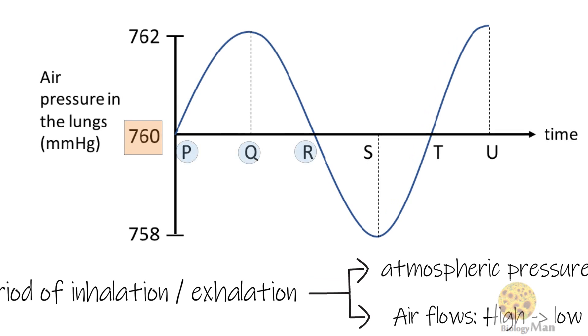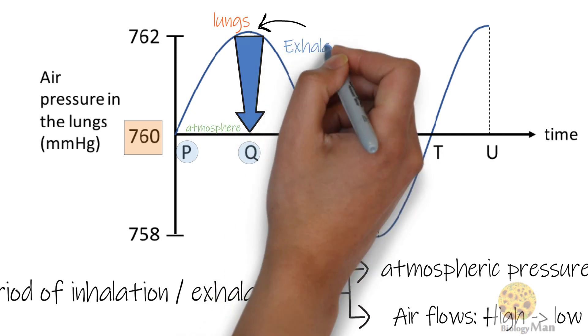In the period PQR, the curve is above 760 mmHg, which means the lung pressure is higher than the atmospheric pressure. So air flows out from the lungs to the atmosphere. Exhalation occurs.